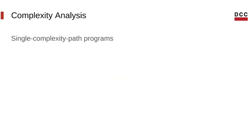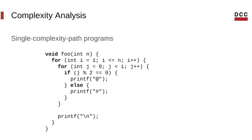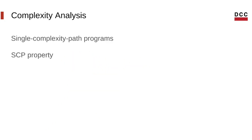We also have the opposite case, where a program has only one single path that influences the overall complexity. Look at this example here — although the program has conditionals and multiple paths, all those different paths contribute only a constant factor to the overall complexity. So we wouldn't have to test many different inputs to get an accurate description of the program's cost. We call this the SCP property, or the single complexity path property, in our work.